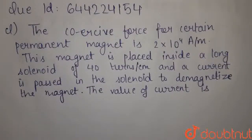Our question is, the coercive force for a certain permanent magnet is 2 into 10 to the power 4 ampere per meter. This magnet is placed inside a long solenoid of 40 turns per centimeter, and a current is passed in the solenoid to demagnetize the magnet. The value of current is,